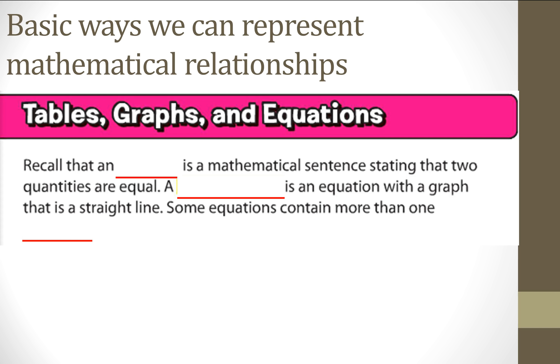And we're back. So recall that an equation is a mathematical sentence stating that two qualities are equal. And a linear equation is an equation with a graph that is a straight line. And some equations contain more than one variable.